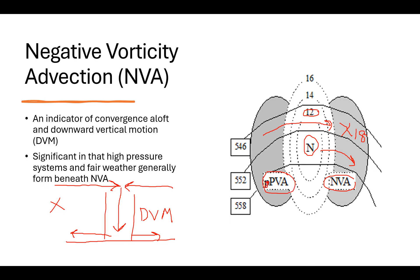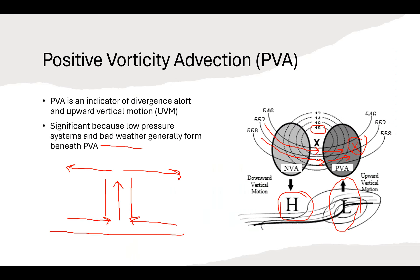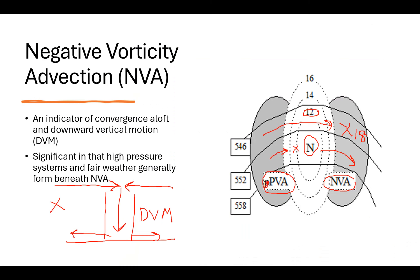Over here on the left we have positive vorticity advection, basically to the west in the Northern Hemisphere, to the left of the vorticity minimum. If you're at the location just to the left of the vort min with a vorticity value of 12, that wind is going to blow in higher vorticity values. With time, vorticity values will increase on the backside of this vorticity minimum from 12 to 14 to 16 — that's positive vorticity advection. These areas of PVA and NVA are associated with either upward vertical motion with clouds and precipitation, or sinking NVA air motion associated with fair weather. They're associated with shortwave ridges and shortwave troughs in the atmosphere.